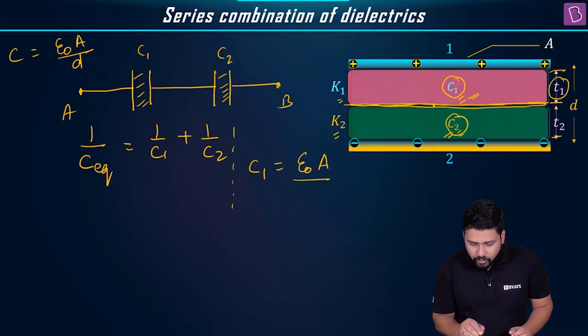If the area is going to be the same, then I am going to get epsilon naught a by, I would have written in normal case d, but over here it is of thickness t1. So epsilon naught a by t1. This would have been the case if it was an air capacitor. Because it has a dielectric constant of k1, I need to add k1 over here. What about c2? c2 is going to be equal to k2 epsilon naught a by t2.